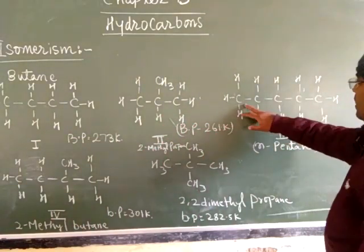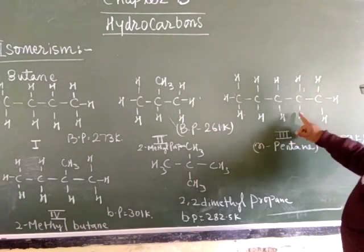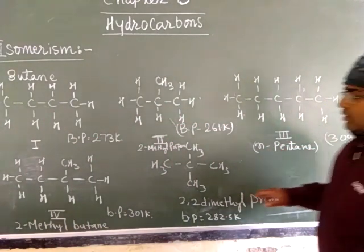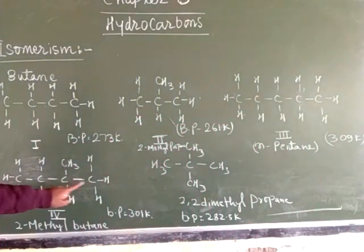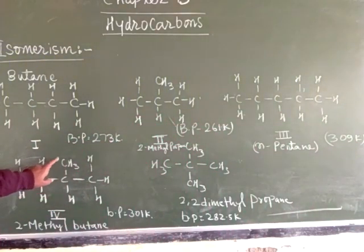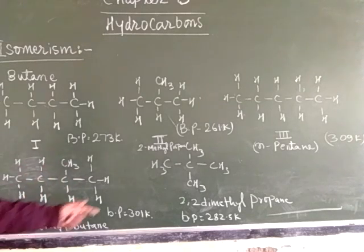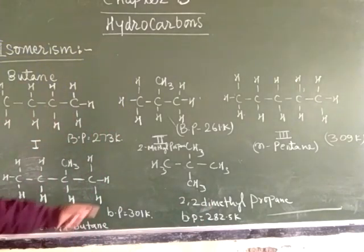Third, pentane: one two three four five. The name of this compound is pentane, common name n-pentane. Second structure: one two three four and five, and the last is 2,2-dimethyl propane.